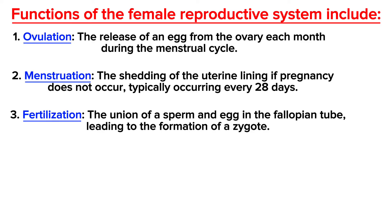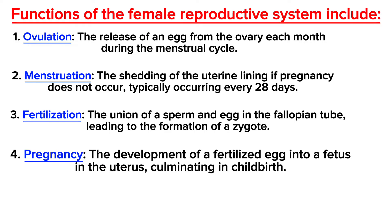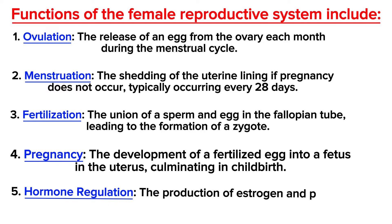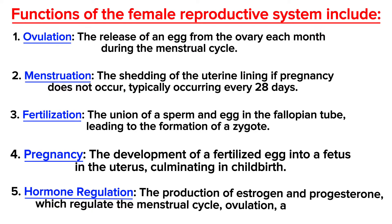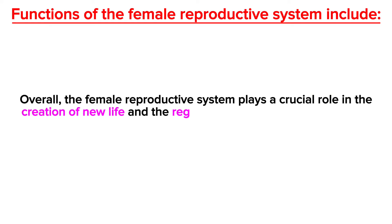The fourth function is pregnancy — the development of a fertilized egg into a fetus in the uterus, culminating in childbirth. Lastly, the fifth function is hormone regulation — the production of estrogen and progesterone, which regulate the menstrual cycle, ovulation, and pregnancy. Overall, the female reproductive system plays a crucial role in the creation of new life and the regulation of reproductive processes throughout a woman's life.